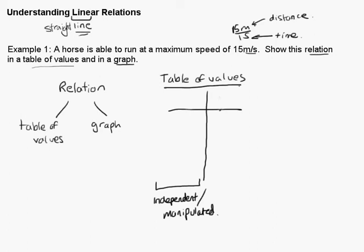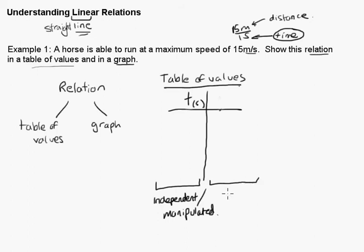In this case, the independent or manipulated variable is time, because time doesn't depend on anything — it's independent, changing one increment at a time: one second, two seconds, three seconds, four seconds. So we put T (seconds) on the left. The other variable is the dependent or responding variable, which is D (distance in meters) on the right.